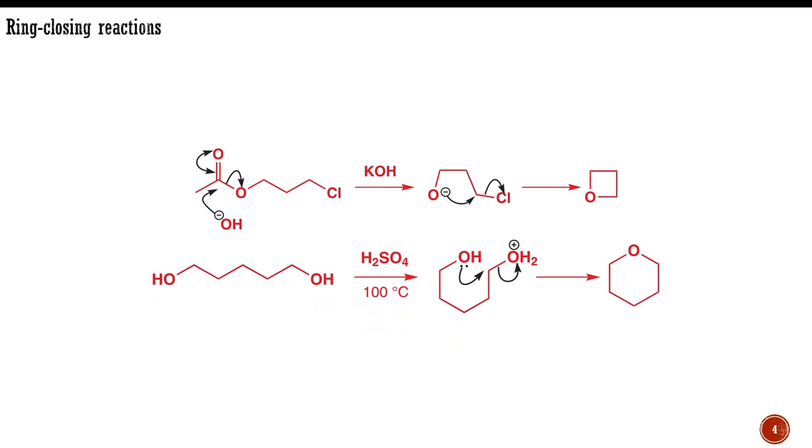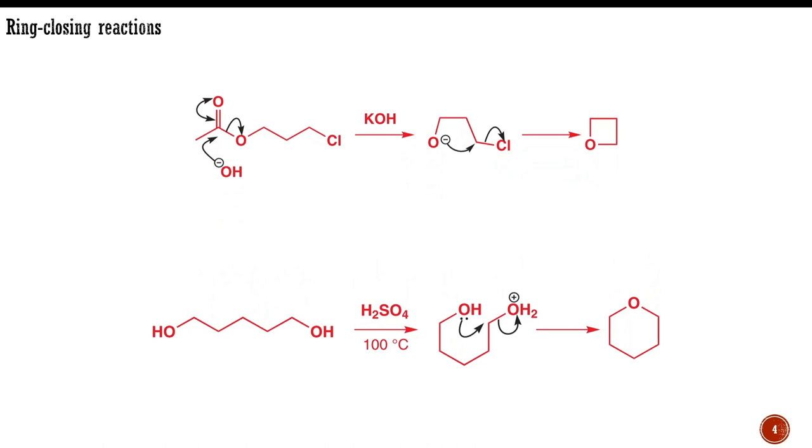Tetrahydropyran was prepared as early as 1890 by a ring-closure that occurs when a mixture of 1,5-pentanediol with sulfuric acid is heated. These are all SN2 reactions, so you will not be surprised that nitrogen heterocycles can be prepared in the same way.